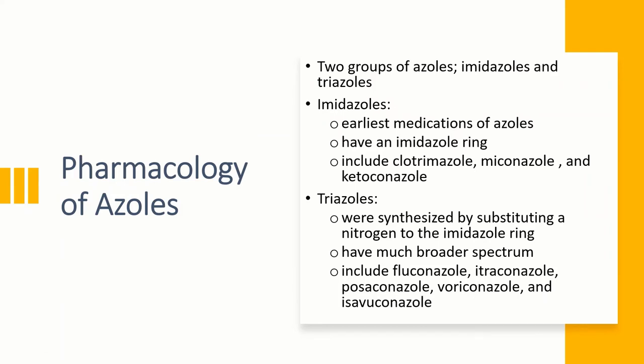There are two groups of azoles depending on their structure: imidazoles and triazoles. Imidazoles have an imidazole ring which has two nitrogen atoms. These are the earliest synthesized azole medications, and this group includes clotrimazole, miconazole, and ketoconazole.